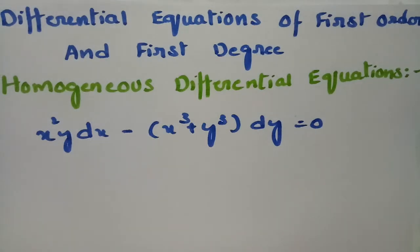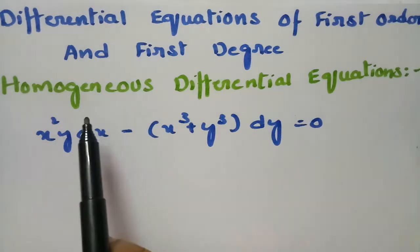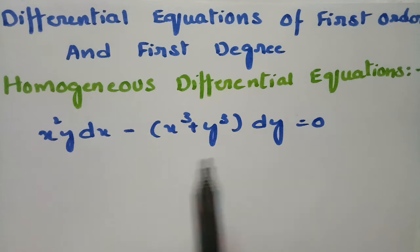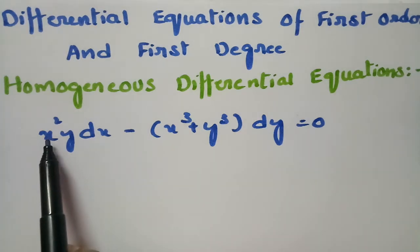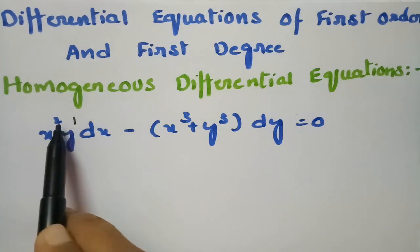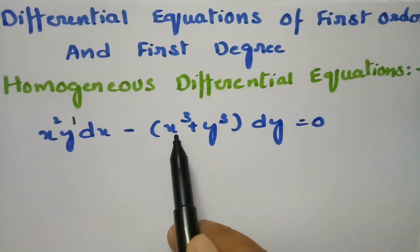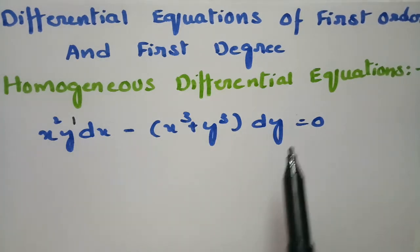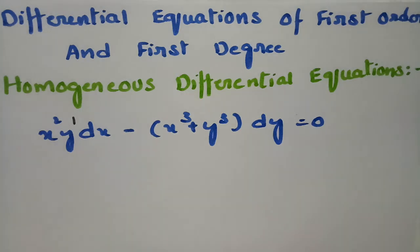Today's topic is homogeneous differential equations from differential equations of first order and first degree. How do we identify a homogeneous differential equation? It's simple: homogeneous means uniformity or maintaining equal degree. If you observe here, this is x squared times y — y power 1 and x squared together gives degree 3. Similarly, the other terms are also degree 3. Throughout the equation we are maintaining an equal degree, so such equations are called homogeneous differential equations.